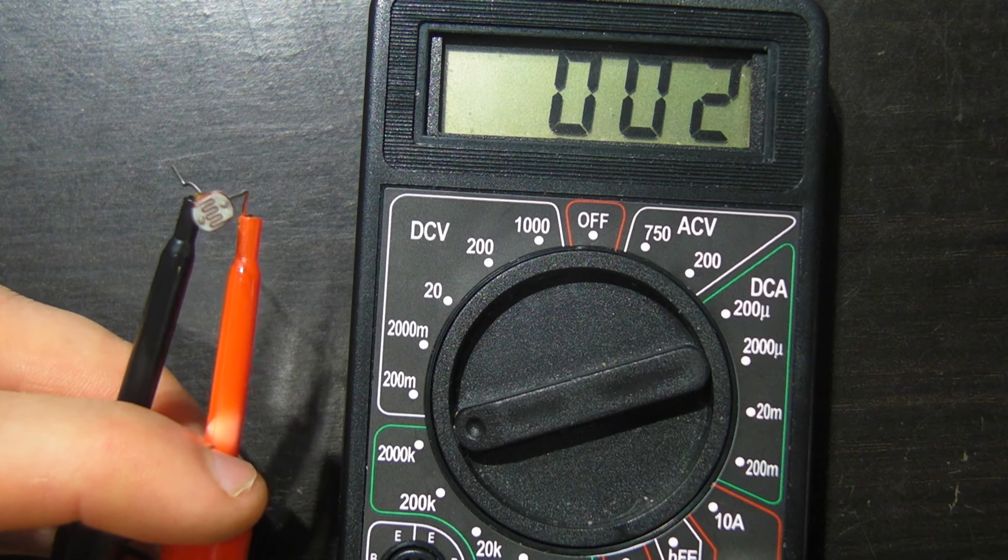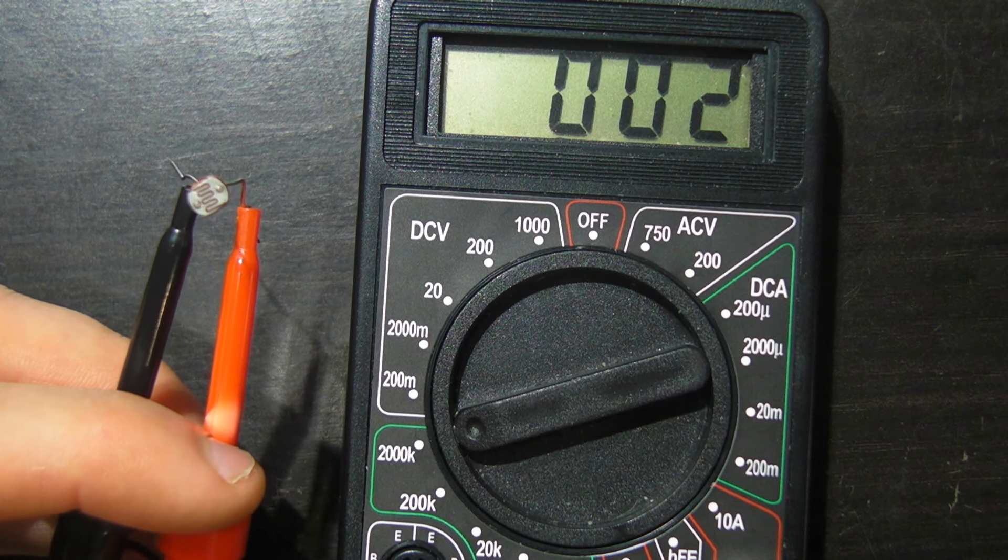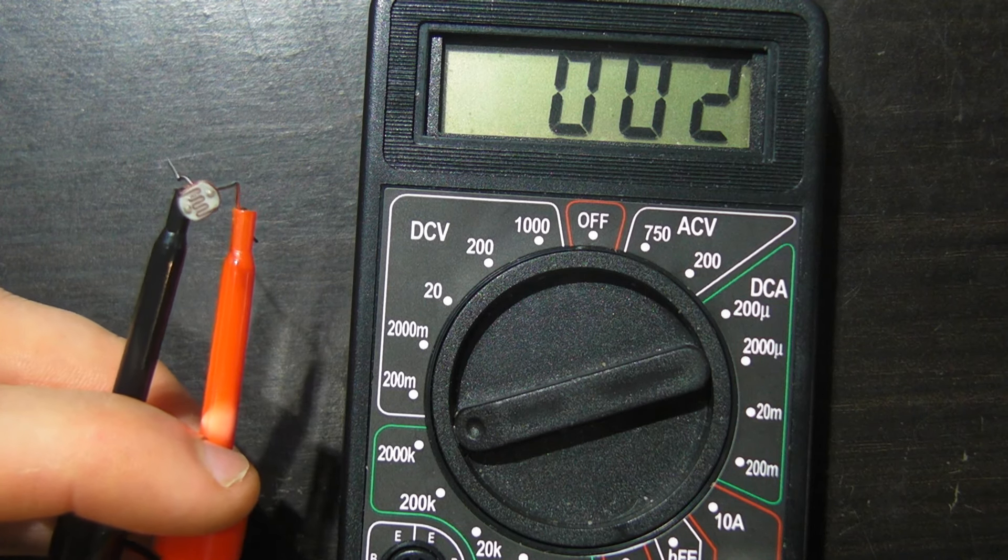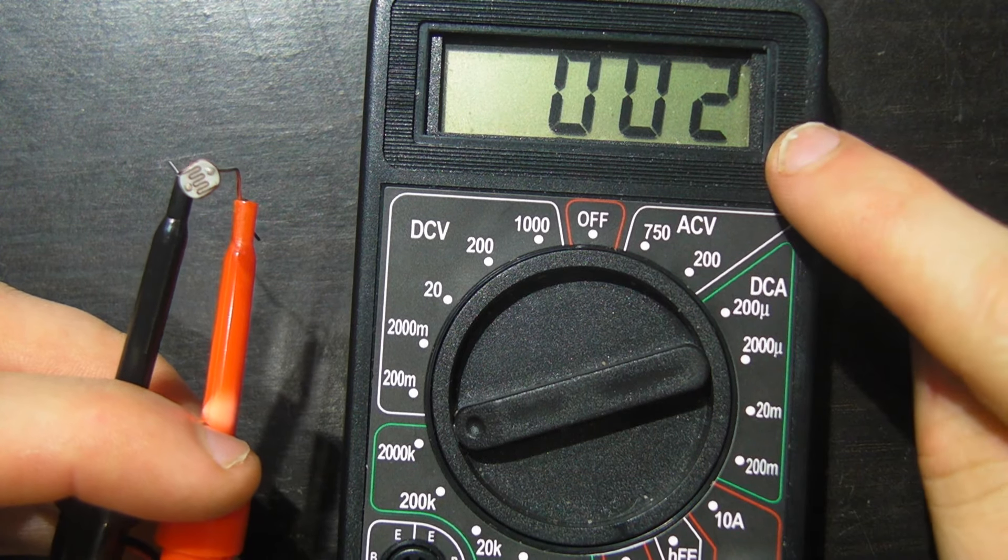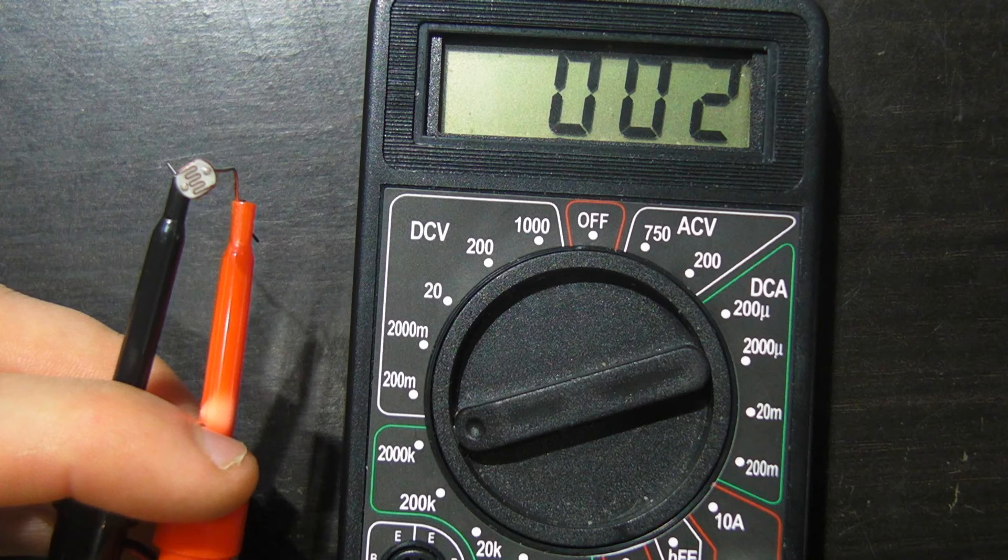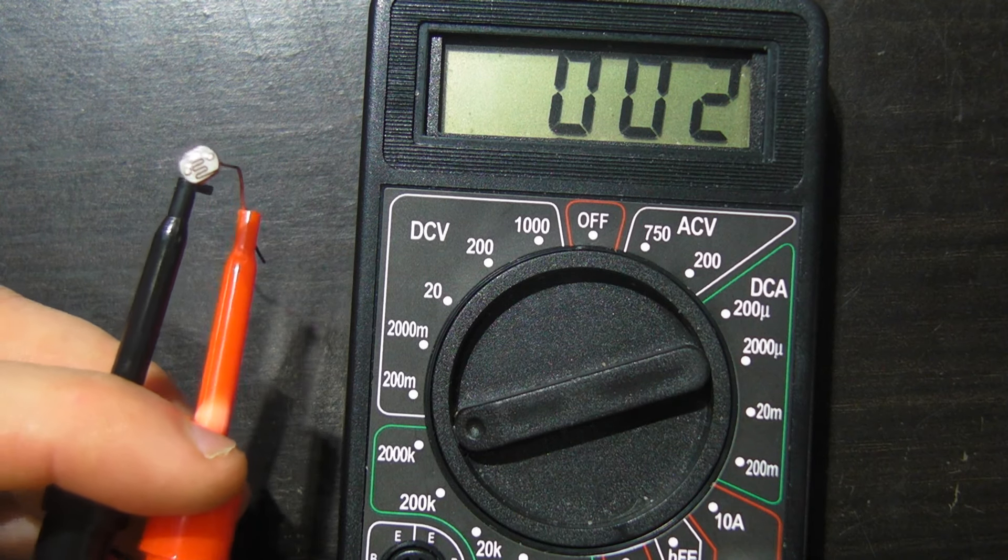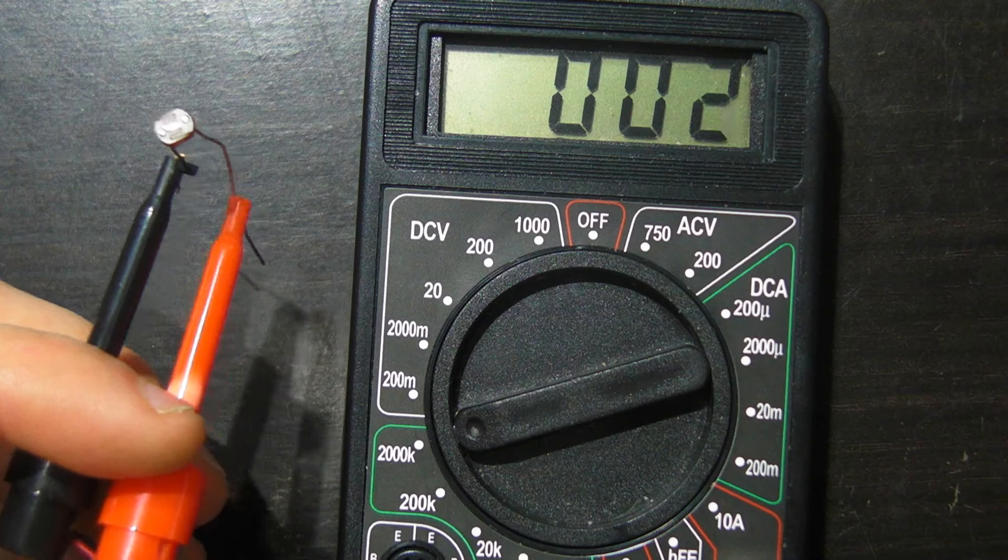I now have this LDR hooked up to a multimeter, so I'm now measuring the resistance across it. I am currently in the kiloohms range, so you can see that at the moment, this resistor has a resistance of 2 kiloohms. Now watch what happens as I bring it up towards the light above me.